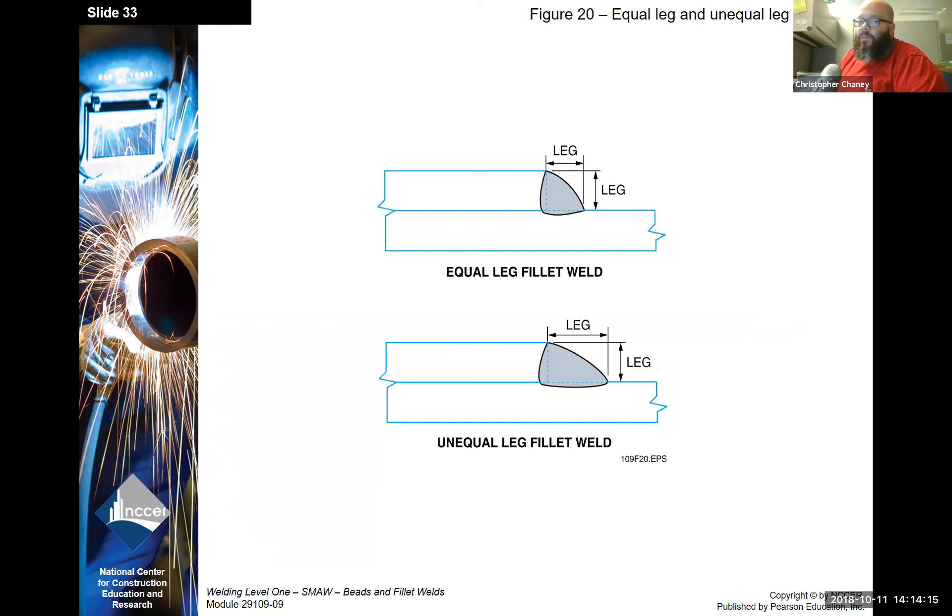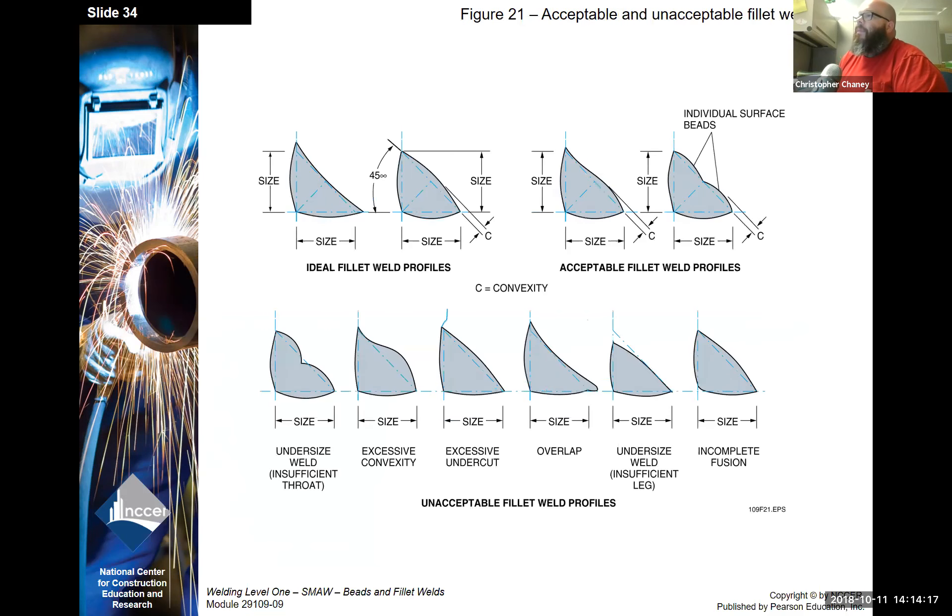And then also on a lap joint, this is also a fillet weld, but here you could have a spec for an unequal leg fillet. Here's acceptable and unacceptable fillet profiles. We also looked at this in the weld quality chapter.